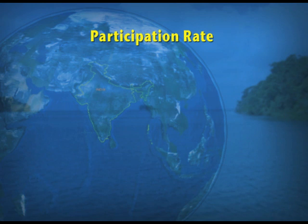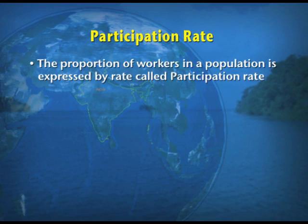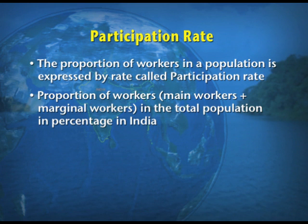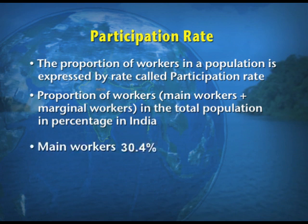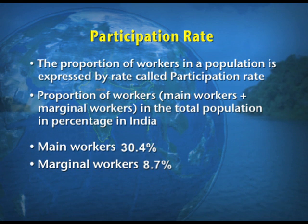The proportion of workers in a population is expressed by the participation rate. The proportion of main workers plus marginal workers in the total population is known as the participation rate. Main workers constitute 30.4%, marginal workers 8.7%, and non-workers 60.9% of the total population.